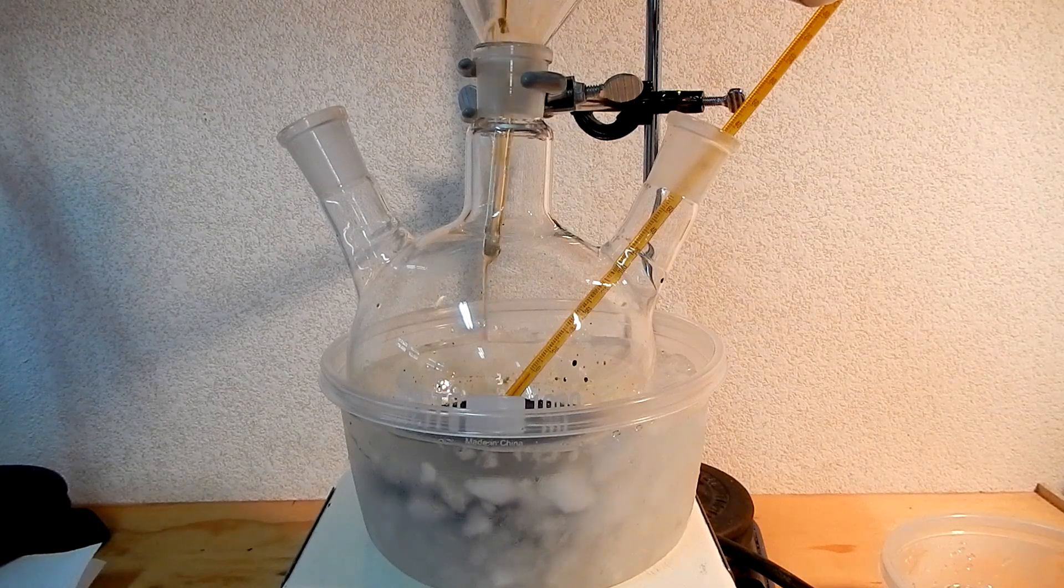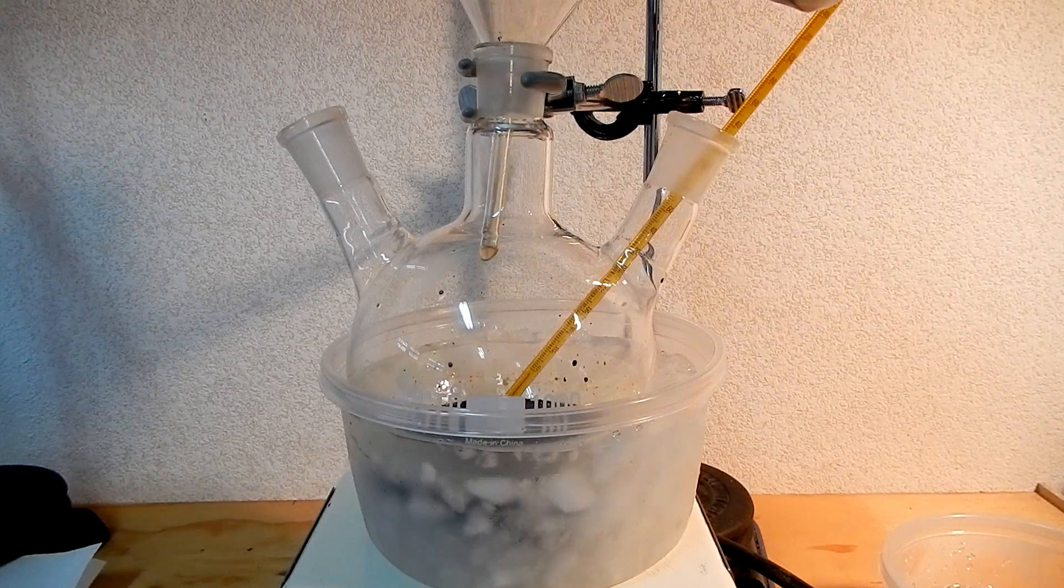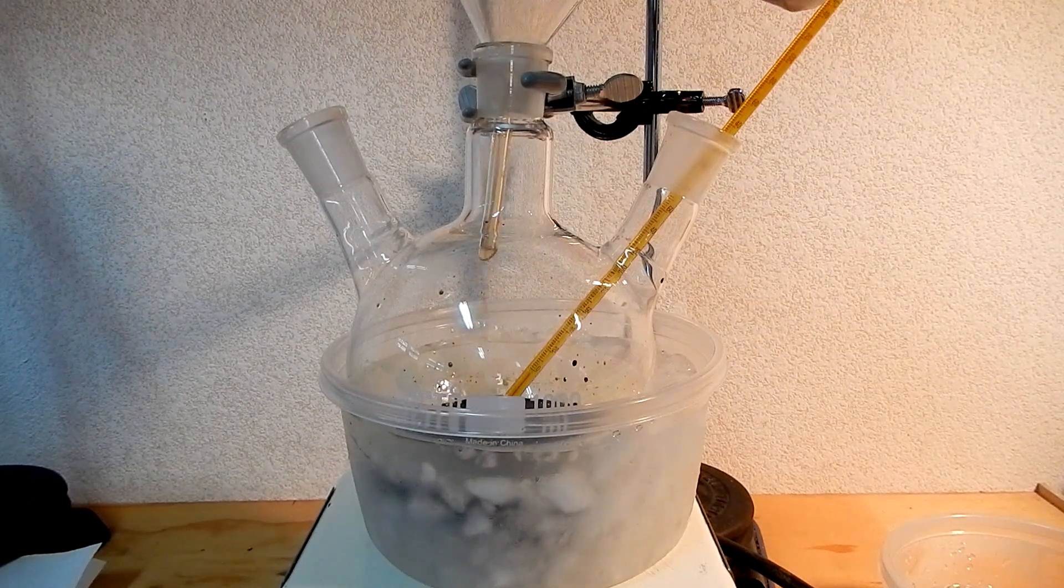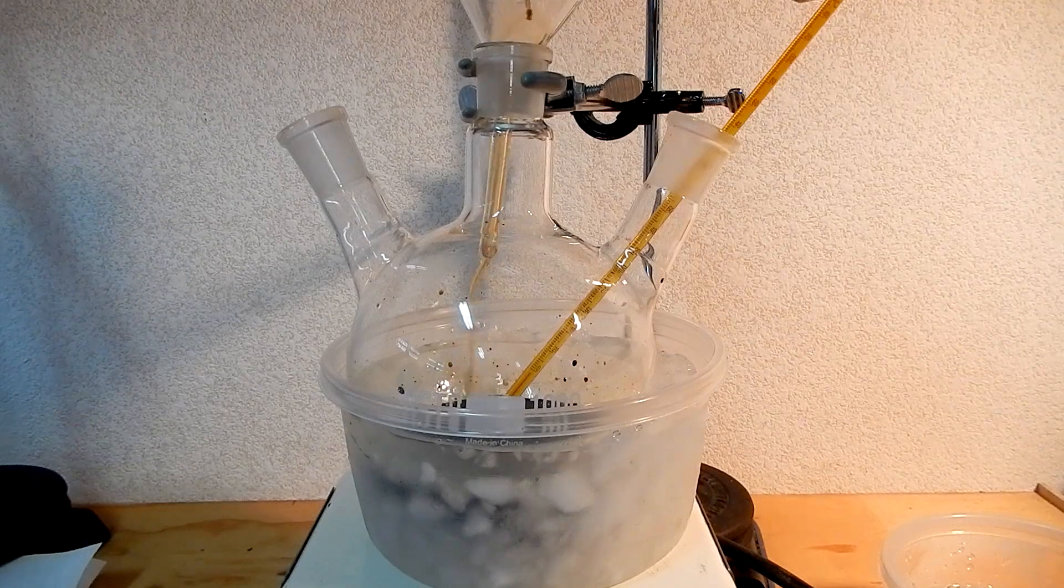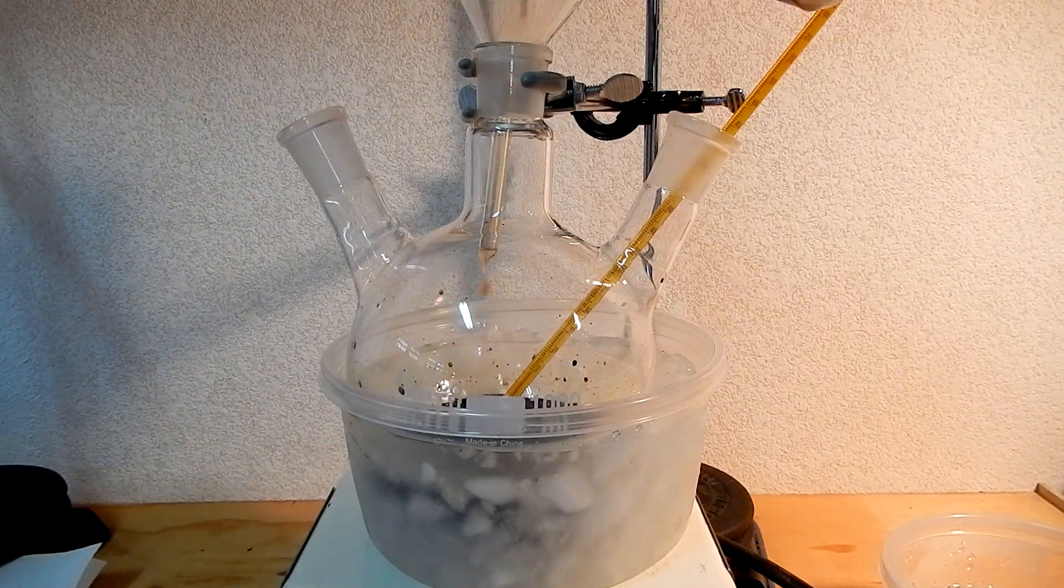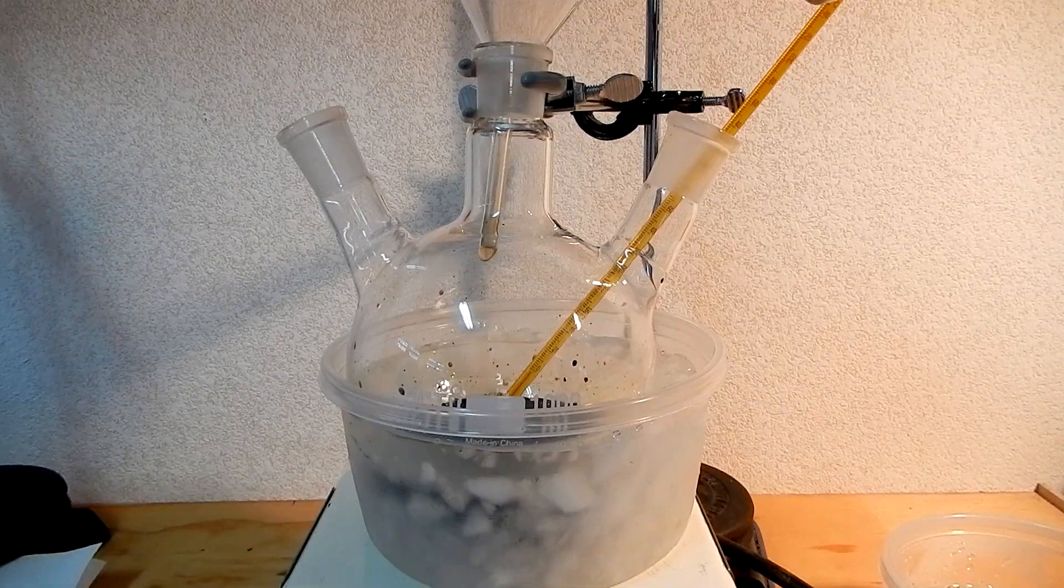The mixture thickens due to the separation of an addition product between the diazonium salt and the copper 1 chloride. During the addition of the diazonium salt, small amounts of brown-orange nitrogen dioxide gas are released.